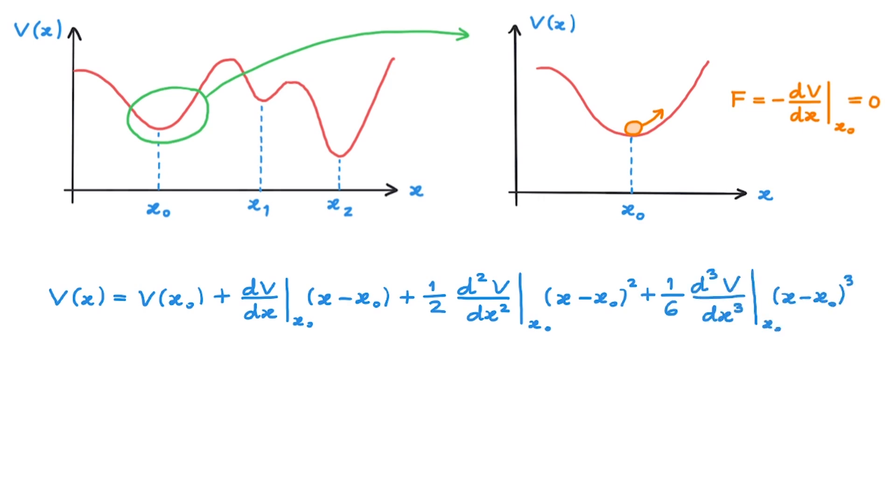As we are expanding about the minimum at x0, then by definition of a minimum this first order derivative vanishes so the linear term is 0. For small enough displacement then the dominant term in the expansion will be the lowest order term which is the quadratic term here.